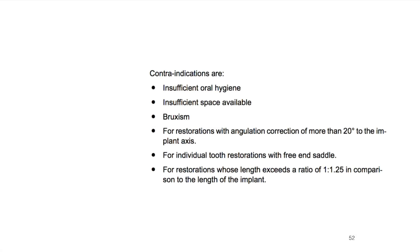Why limit width to 6 millimeters? First, you may not have a block large enough. Second, it creates a free-end saddle issue — chewing forces contribute to a rocking motion on the implant and abutment, putting torque into the screw and distributing torque into the implant-bone interface. We want to minimize that rotational moment created by chewing when something is wider than 6 millimeters from the screw channel interface.